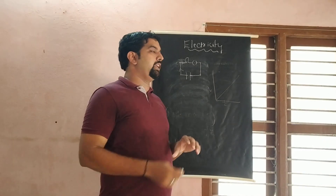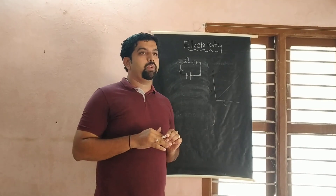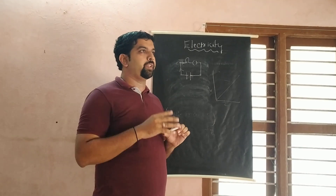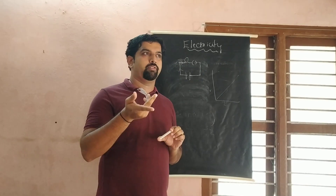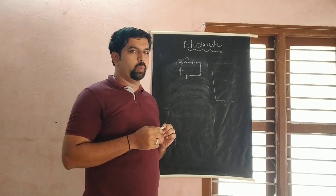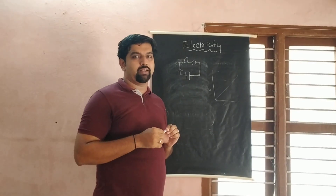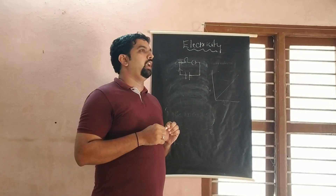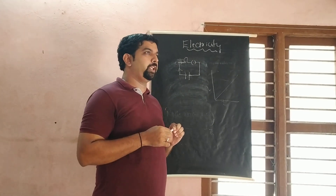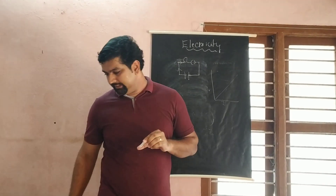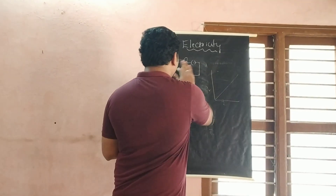Regarding electric charge, you should know the formula n = q / e, which tells you how many electrons are present in a given charge. For example, you can calculate how many electrons are in 1 coulomb of charge. There are small additional points to learn — please open the textbook and learn them in detail.